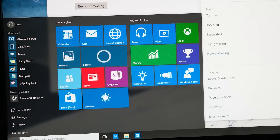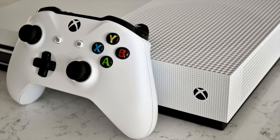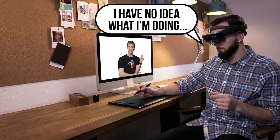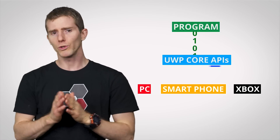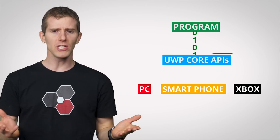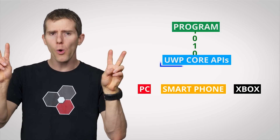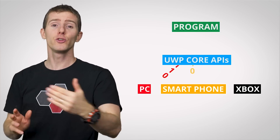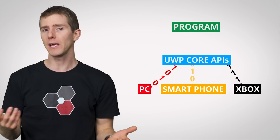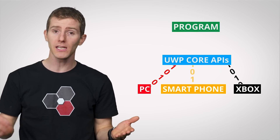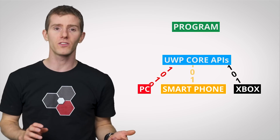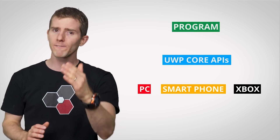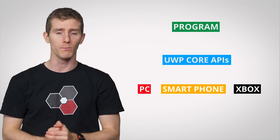So UWP will work on Windows 10, the Xbox One, and HoloLens. UWP achieves this by having a number of core APIs that work behind the scenes to allow code to be understood and executed properly across these devices. And it's also got some features that are more visible to you the consumer at home.